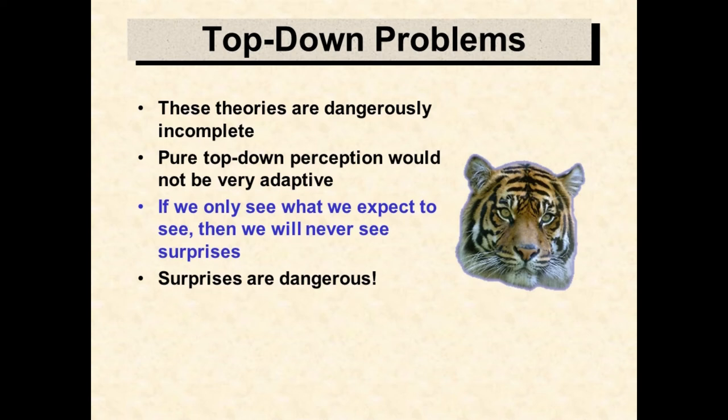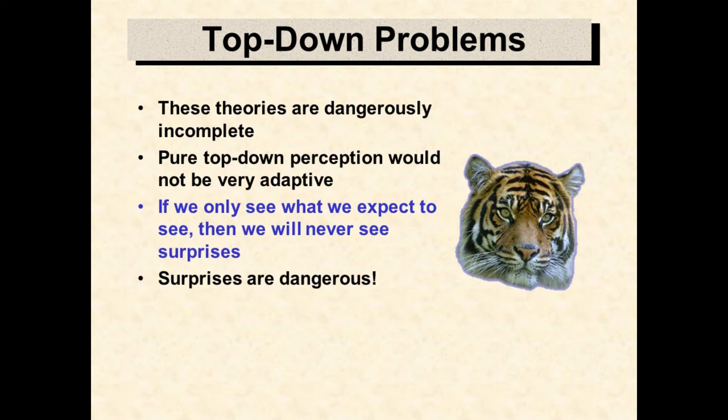A pure top-down theory has problems too. If we only see what we expect to see, then we will not see surprises. Unfortunately, it is the surprises in the world that kill us. I don't expect to see a tiger running around in Mill Creek Ravine. However, I hope that in spite of this, if I did happen to encounter one — escaped from the zoo, perhaps — my visual system would be able to see it and enable me to avoid being eaten by it.